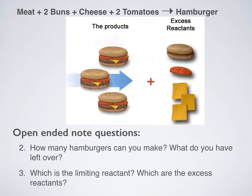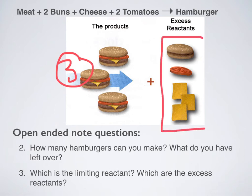The answer? I can make three hamburgers. And what do I run out of? Well, technically, I ran out of meat first. What do I have excess or leftover? I have all of these things left over. I have two leftover buns, I have one leftover piece of tomato, and I have three extra pieces of cheese.